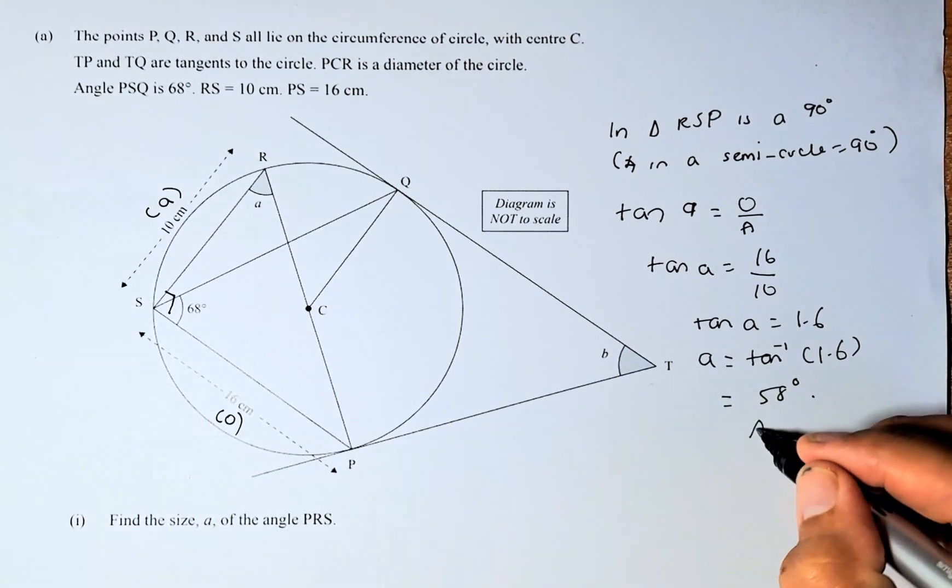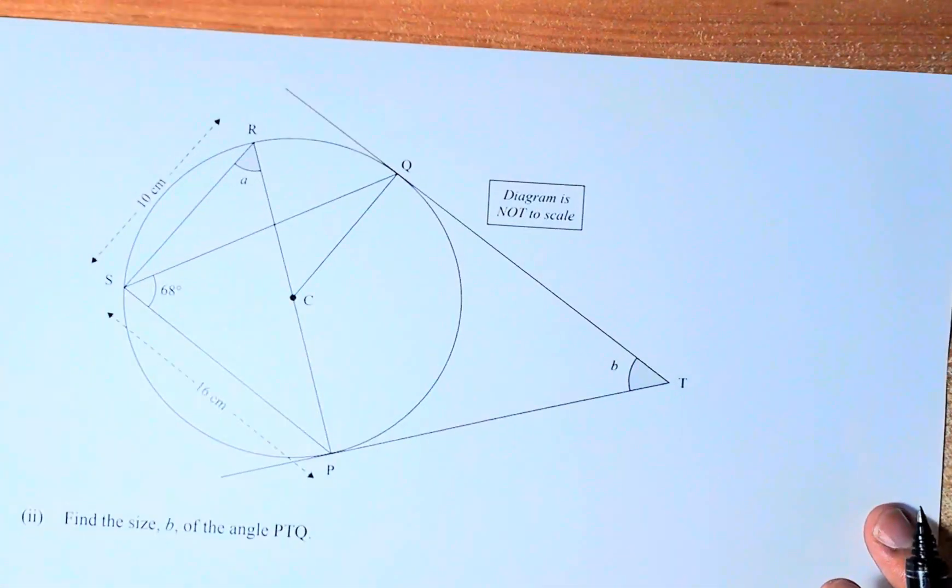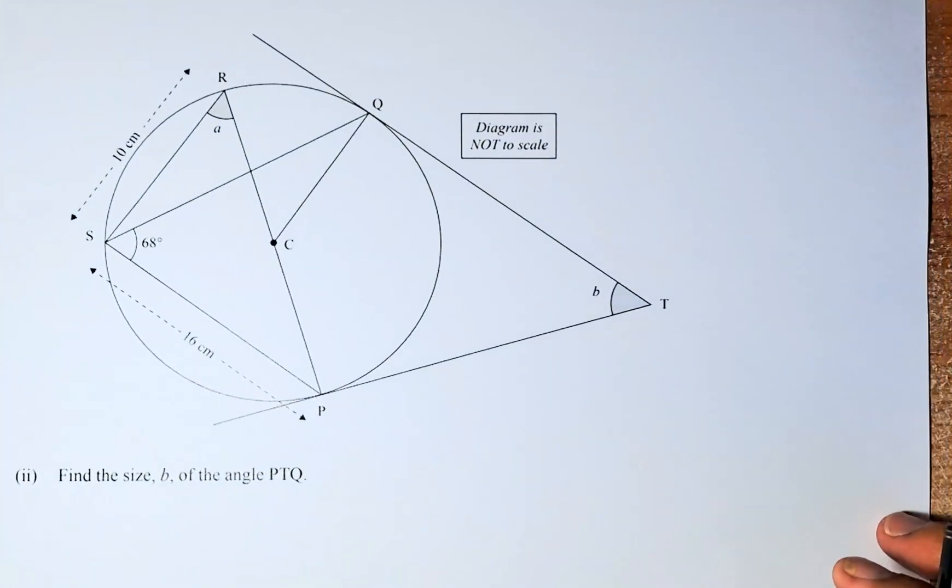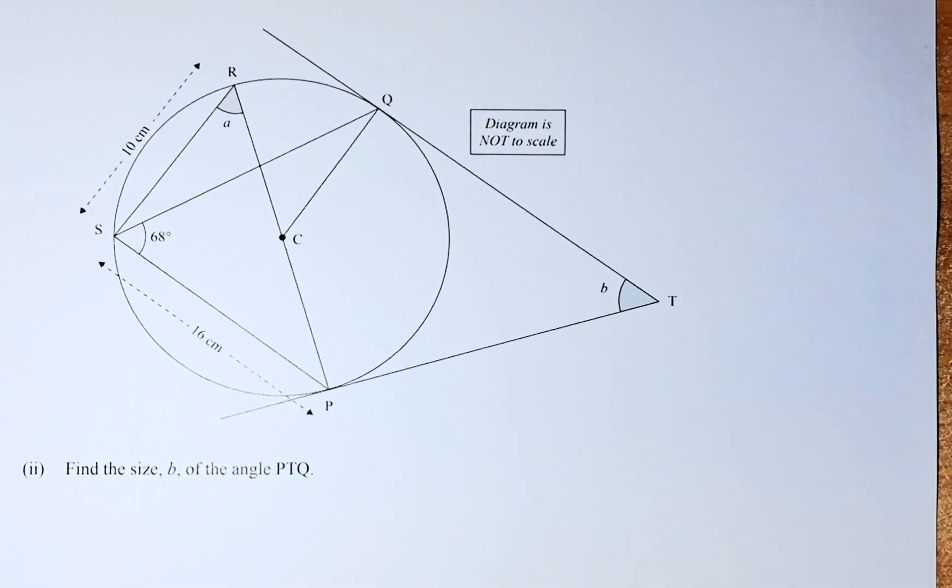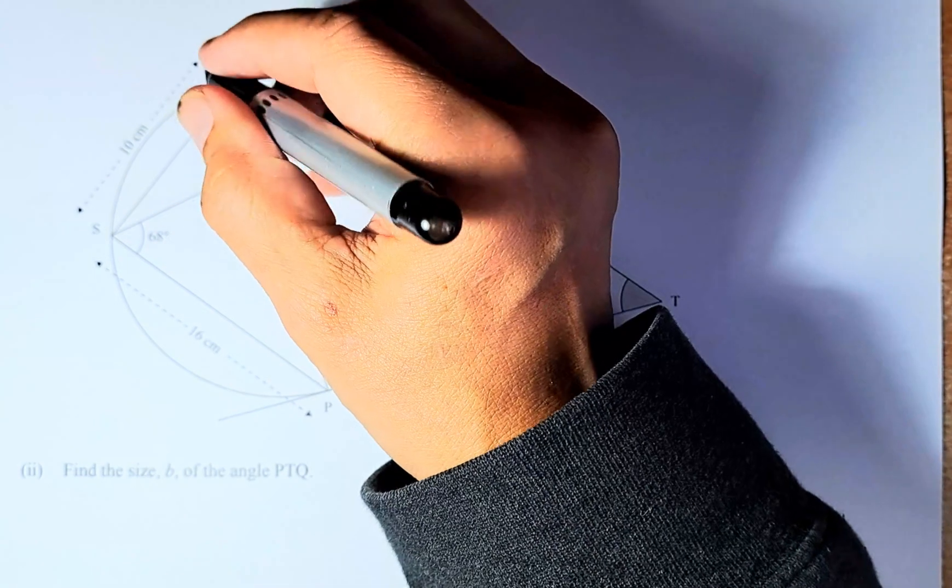And that is an achieve in that question. Now we are going to find angle B. Angle B is at this corner here. So we are going to solve them. We know that angle A is now 58 degrees.